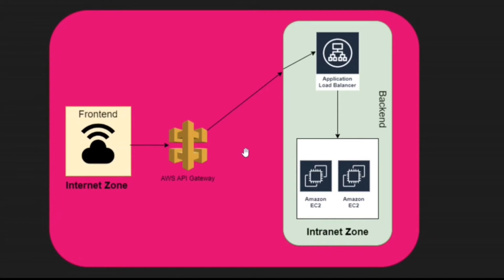When the front-end application needs to pull some data from the back-end application, how does the connectivity work? It's pretty simple — we just introduce the AWS API Gateway between the internet zone and the intranet zone. The API gateway directly points to the load balancer, and the load balancer has the two EC2 instances registered as targets inside the target group. That's how connectivity flows from the front-end to the back-end applications.